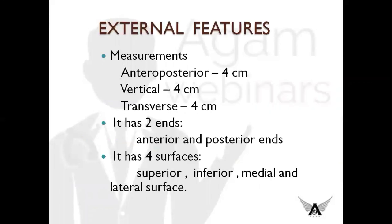Moving on to the external features: the thalamus measures 4 cm in the antero-posterior axis, vertically it also measures 4 cm, and transversely it also measures 4 cm. The thalamus has two ends and four surfaces. The two ends are anterior and posterior ends, and the four surfaces are superior and inferior surfaces — also called dorsal and ventral surfaces respectively — and medial and lateral surfaces.